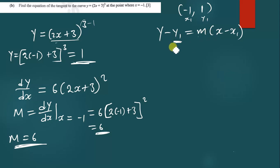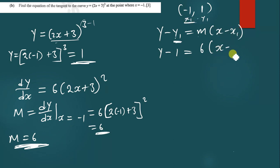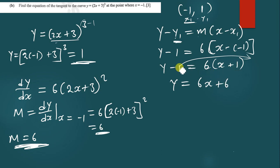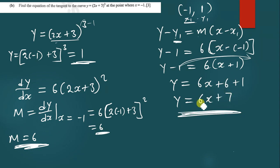We substitute everything into the line equation: y minus 1 equals 6 times (x minus negative 1), giving y minus 1 equals 6x plus 6. Taking the negative 1 to the other side, y equals 6x plus 6 plus 1, which gives y equals 6x plus 7. This is the equation of the tangent to the curve at the point where x equals negative 1.